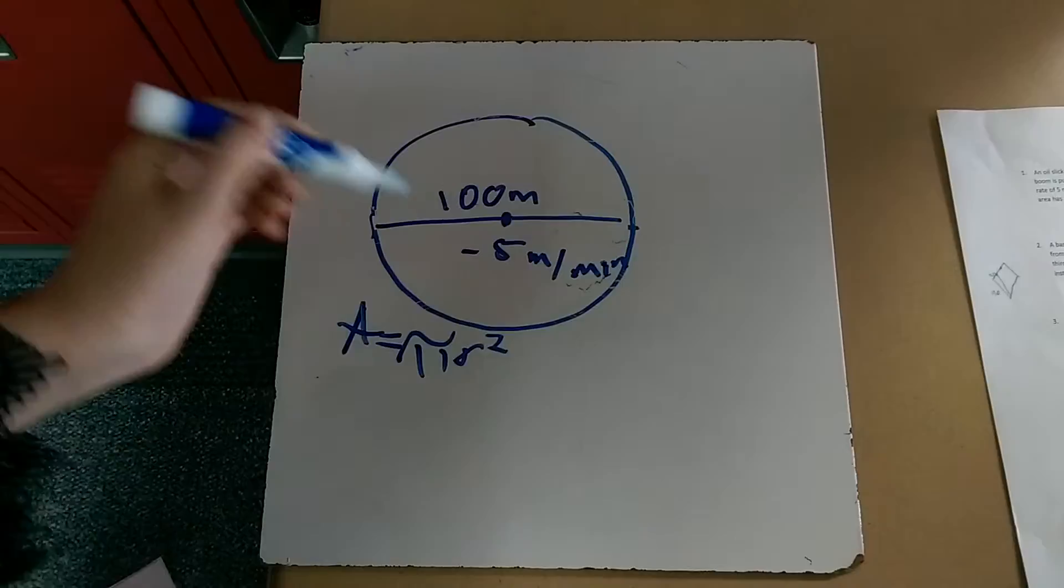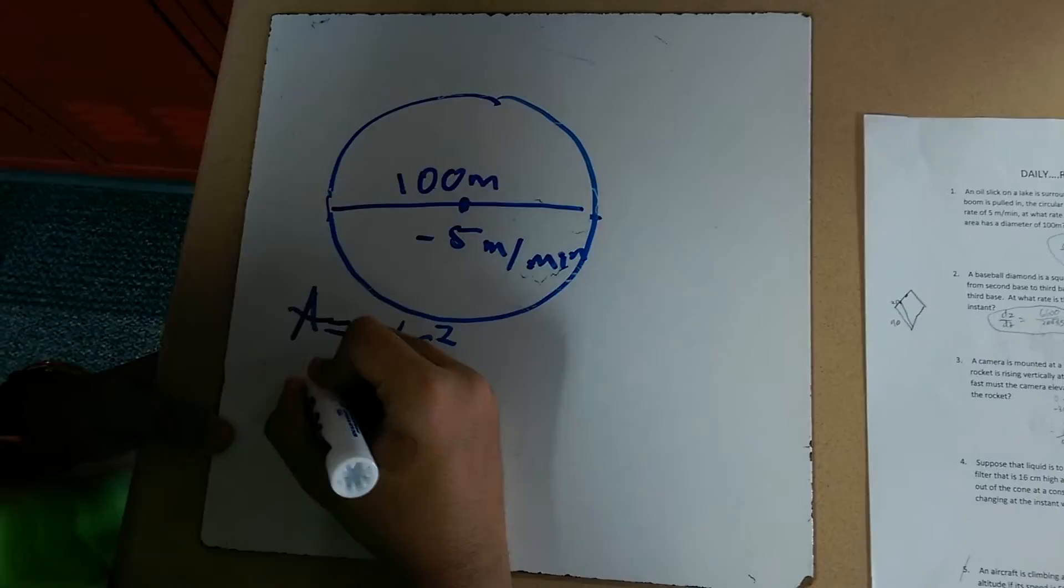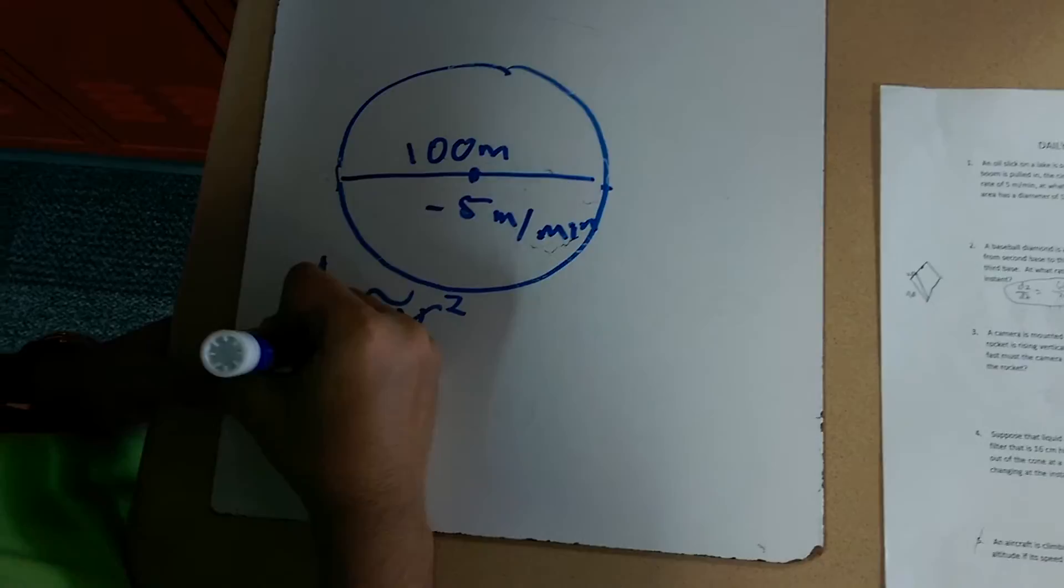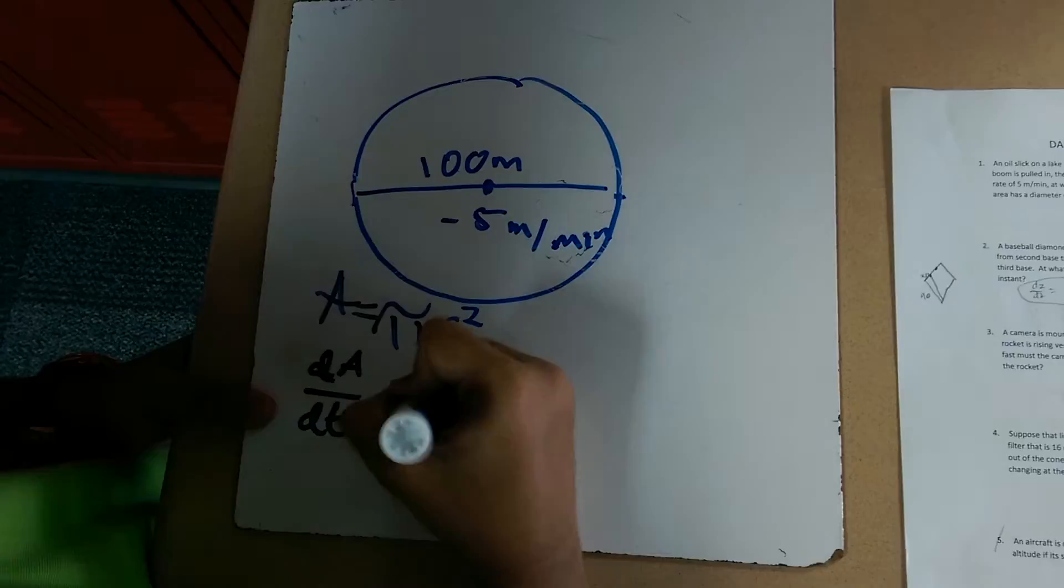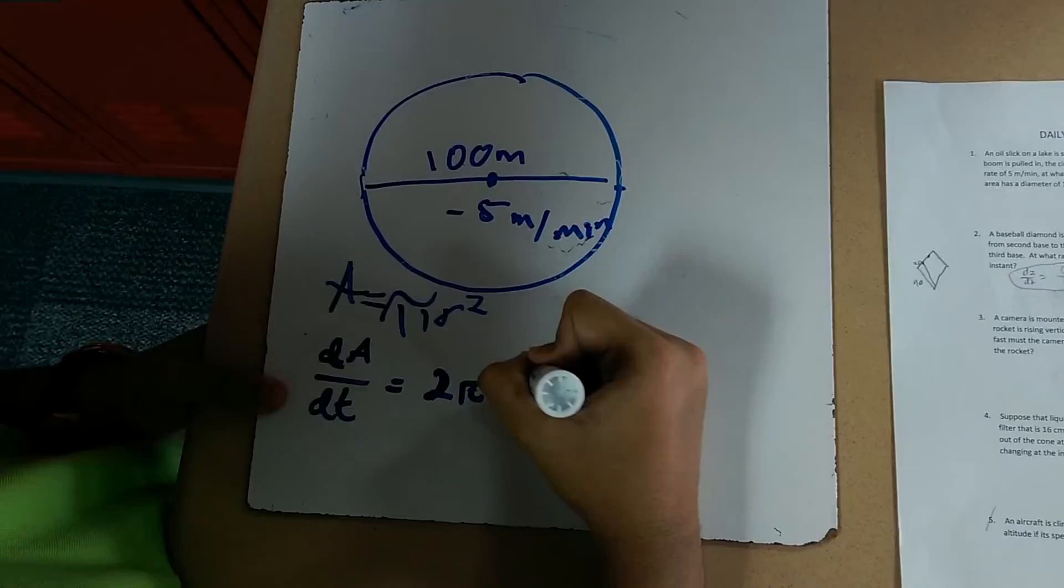To derive this, we have to derive it in terms of time. So dA/dt equals 2πr dr/dt.